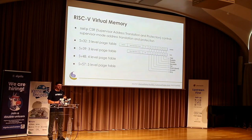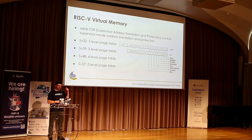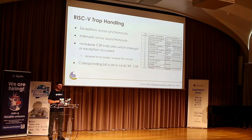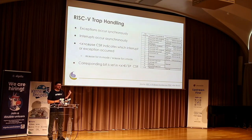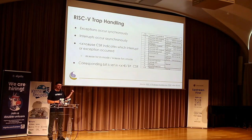For virtual memory, there's a supervisor address translation and protection CSR. For basic systems there's SV32 with three page levels; for 64-bit it goes up to SV57, a 57-bit virtual address space with a five-level page table. For trap handling, exceptions happen synchronously and interrupts asynchronously. The cause register (M-cause in M-mode, S-cause in S-mode) tells us what happened — which type of exception or interrupt occurred.